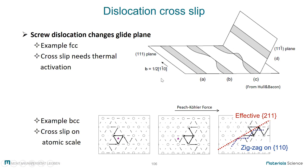We can imagine driving this dislocation to the right along the x coordinate, and then because there is an obstacle ahead with no way forward, the screw dislocation can change its glide plane — that is called cross-slip. In this case it switches from one {111} plane to another {111} plane, which is also a glide plane, and continues gliding on that plane.